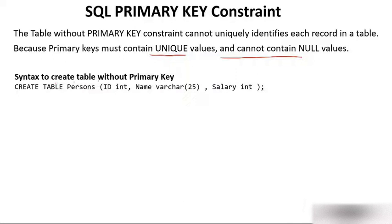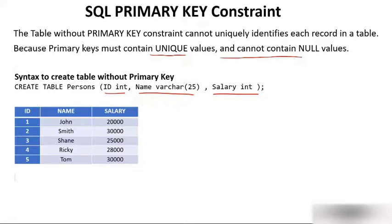Now the syntax to create a table without a primary key. We have already seen this before — I'm creating a table again to show you the problem. Create table person: id int, name varchar, salary int. This table has three columns — id, name, and salary — with five rows: 1 through 5, John, Smith, Shane, Ricky, Tom, and their respective salaries.